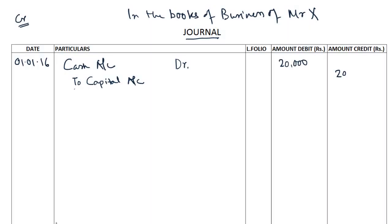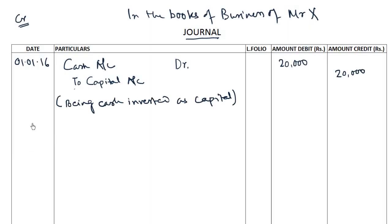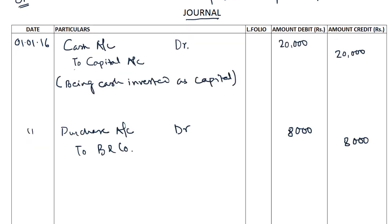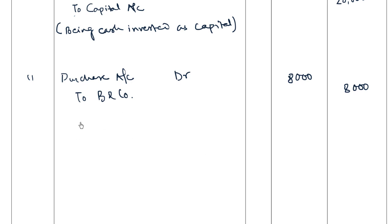Let us enter the journal entry for this transaction on the same date: Purchase Account Dr to B and Company, rupees 8,000 on both sides, with the appropriate narration.